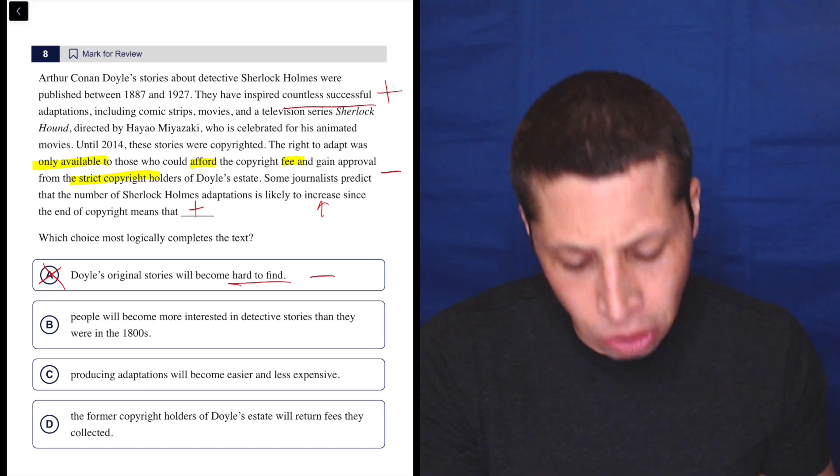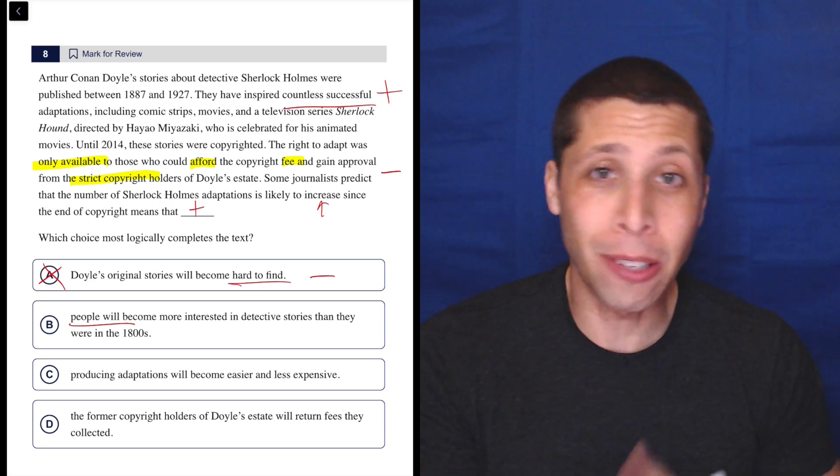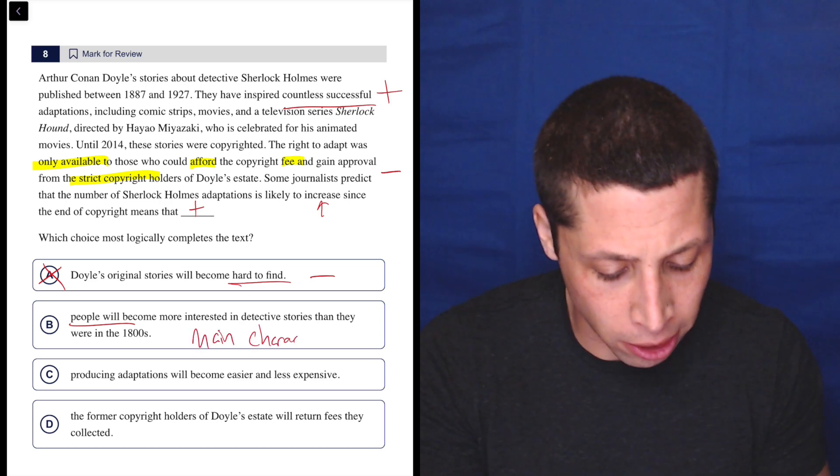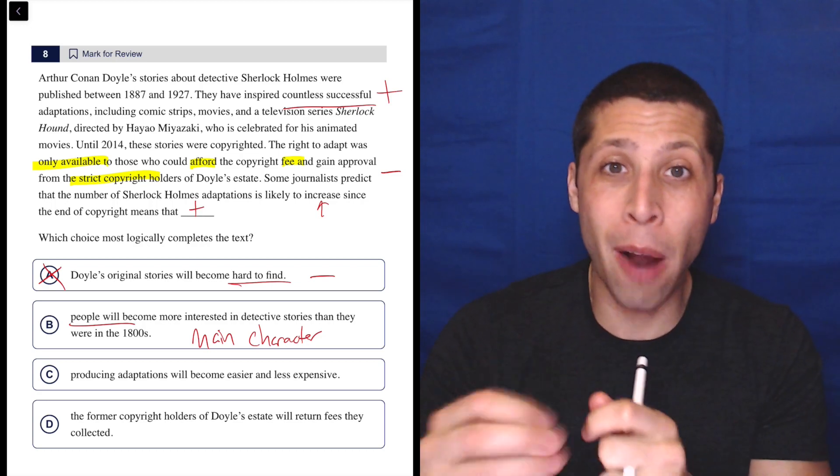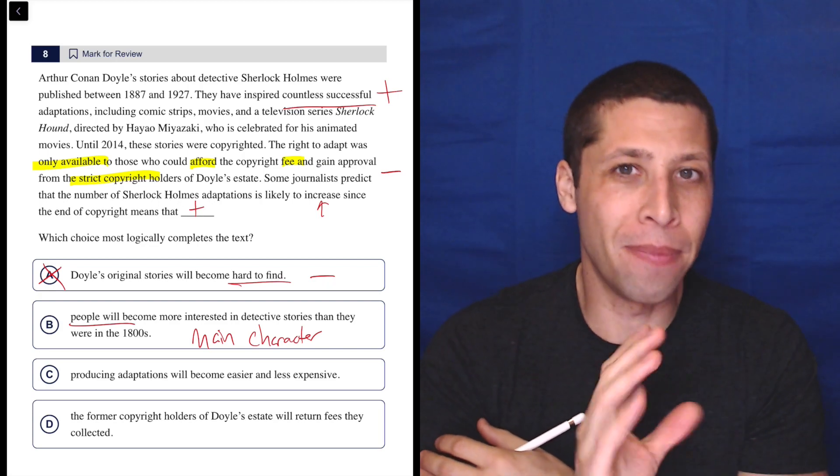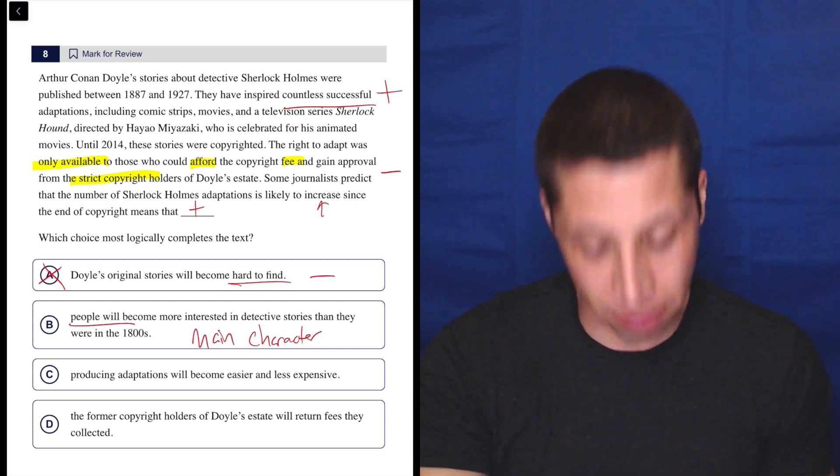Choice B: people will become more interested in detective stories than they were in the 1800s. We don't know that. We don't know what people will want. This is changing the main character of the story. The character here is the Sherlock Holmes stories, so now we're switching it to the people who read those stories. They were not really talked about here. We're talking about making stuff for those people, not what those people themselves think.